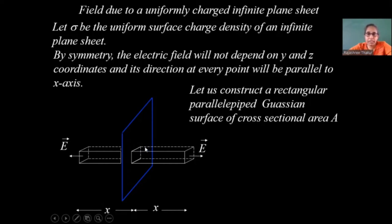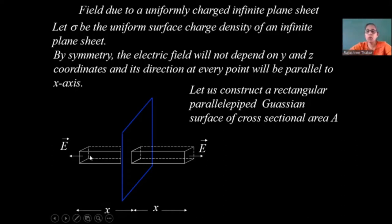Here the electric field is parallel to the other four faces — the sides, the below, and the top. Since the electric field is parallel to these surfaces, the area vectors are normal to the electric field. The angle between the area vector and the field is 90 degrees, hence cos 90 is 0, so these faces do not contribute to the flux.